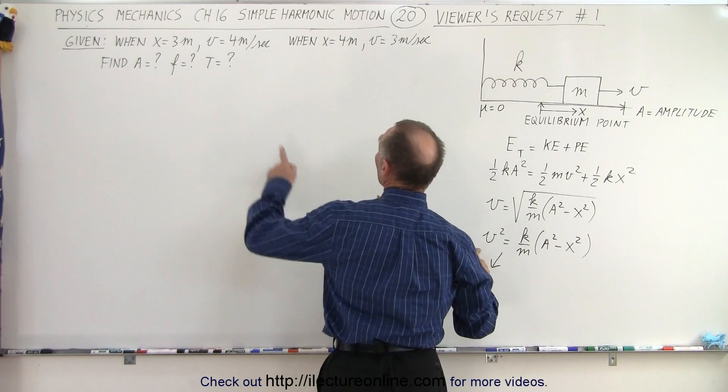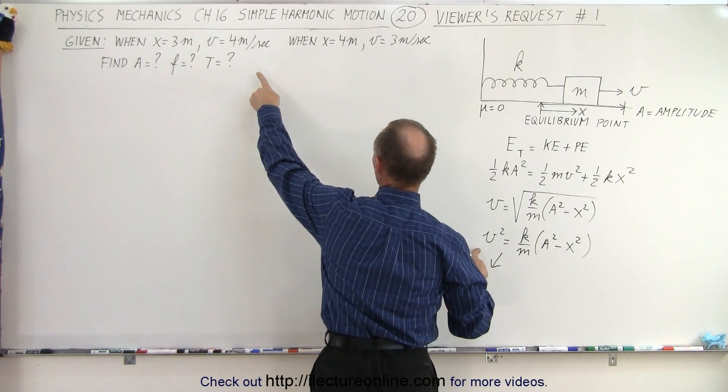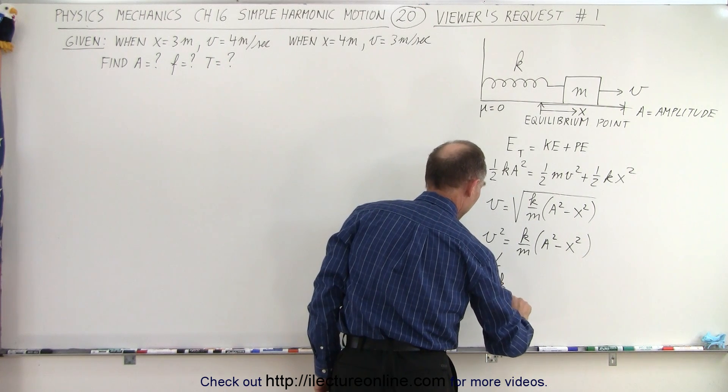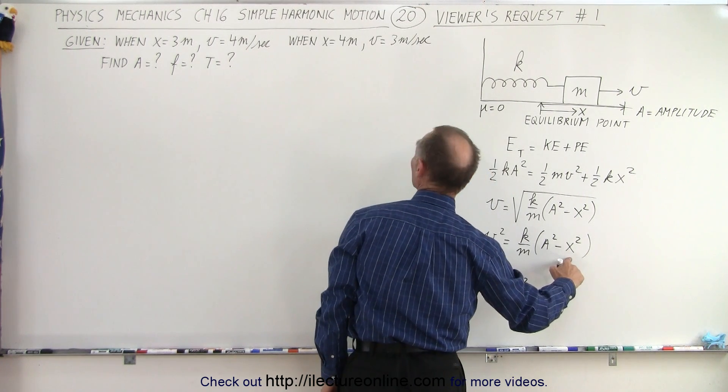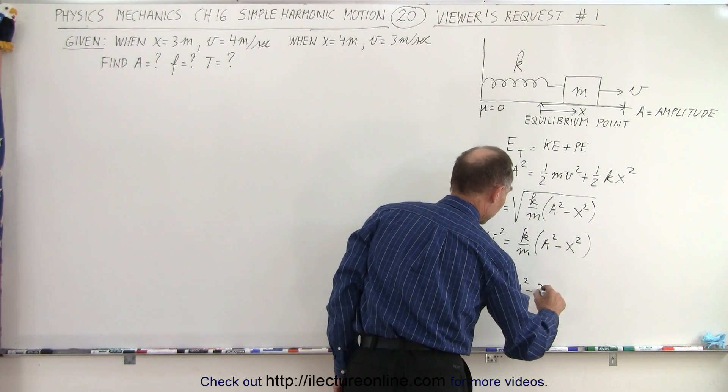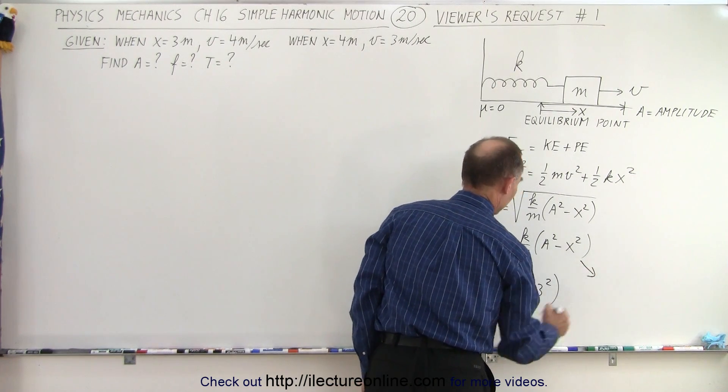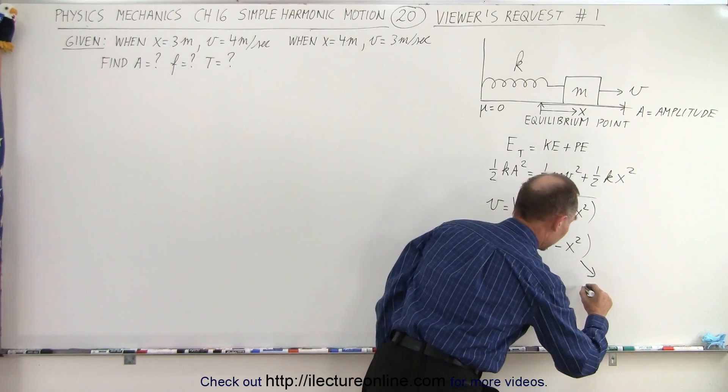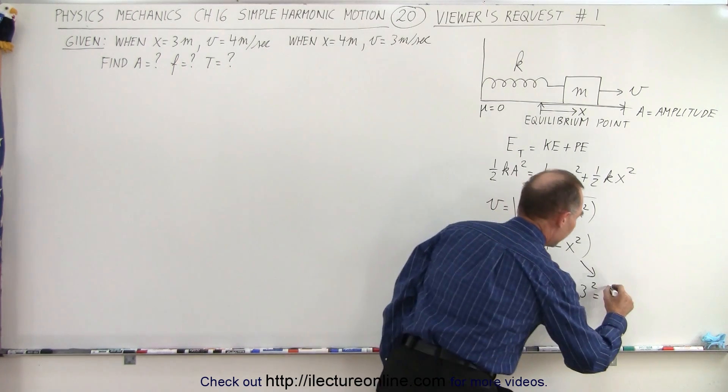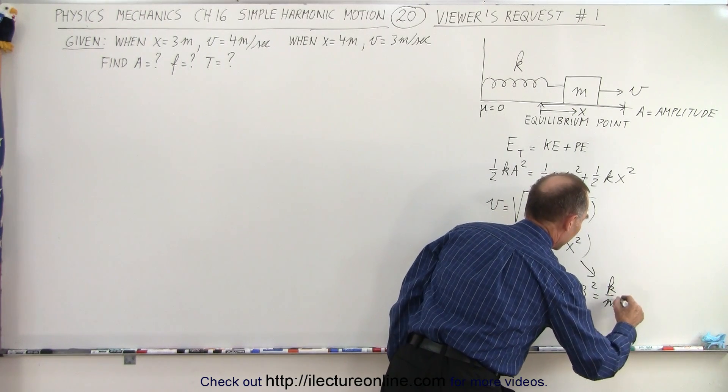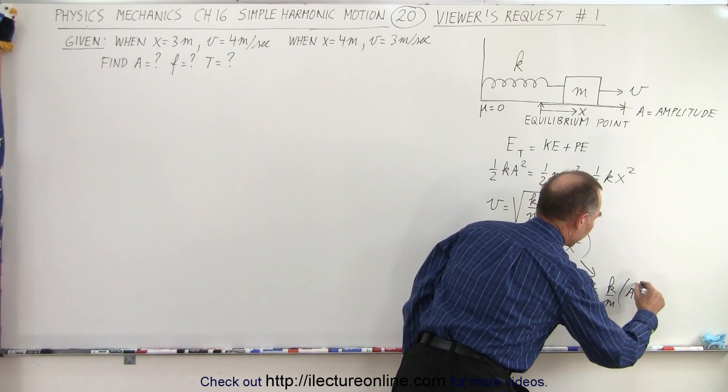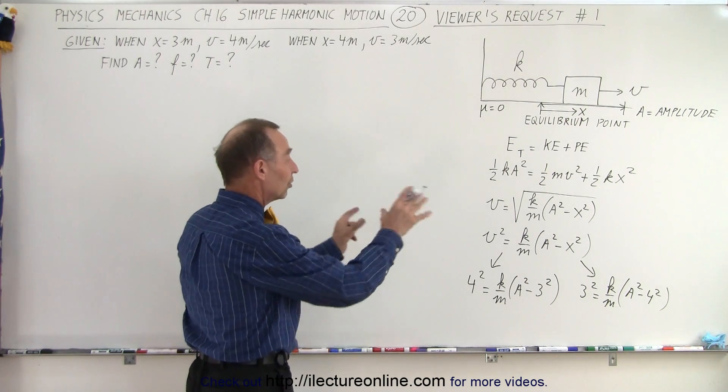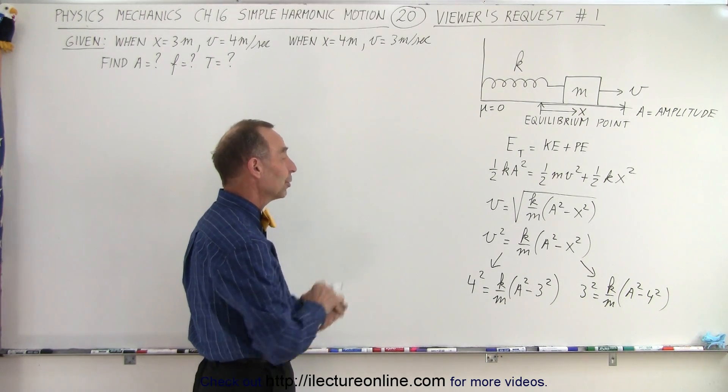So in the first case we have v is four meters per second, so we end up with four squared equals k over m times a squared minus x squared, so it would be three squared. And in the other case, we plug in the other numbers. We can say that v squared, this gives v equals three, so we get three squared equals k over m times a squared minus four squared. So those are the two situations they gave us. We plug both of those into the same equation, and we end up with those two equations.